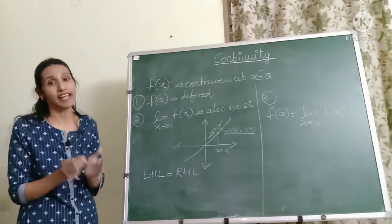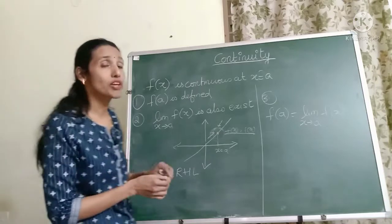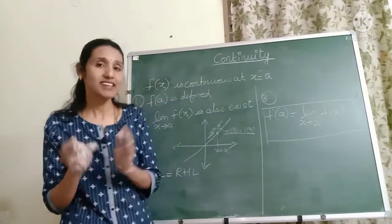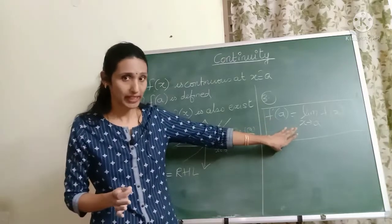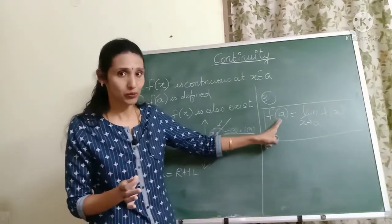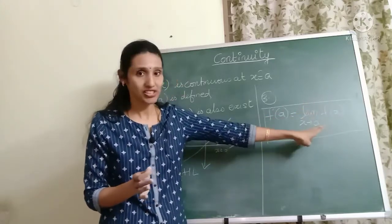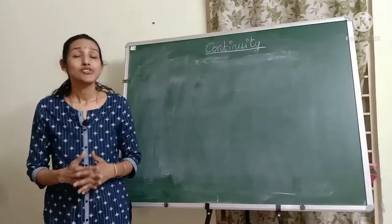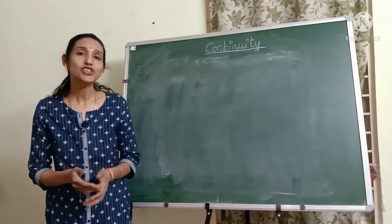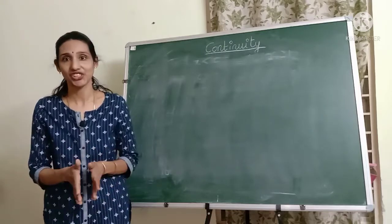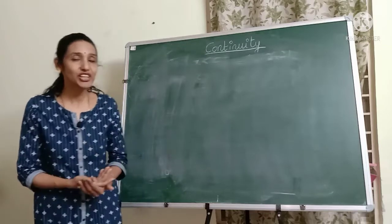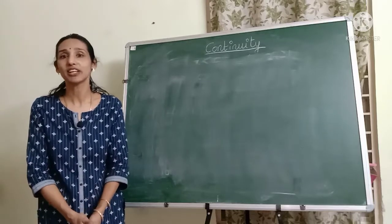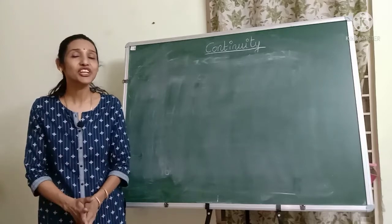These are the three conditions that have to be satisfied, and with this we also come to the formal definition of continuity: a function f(x) is said to be continuous at a point x = a if the value of the function at x = a is the same as the limit of the function as x tends to a. In the next video we will be solving two very interesting examples on the continuity of functions. Do like, share, and subscribe to Enjoy Math, and please leave your comments below. Take care.